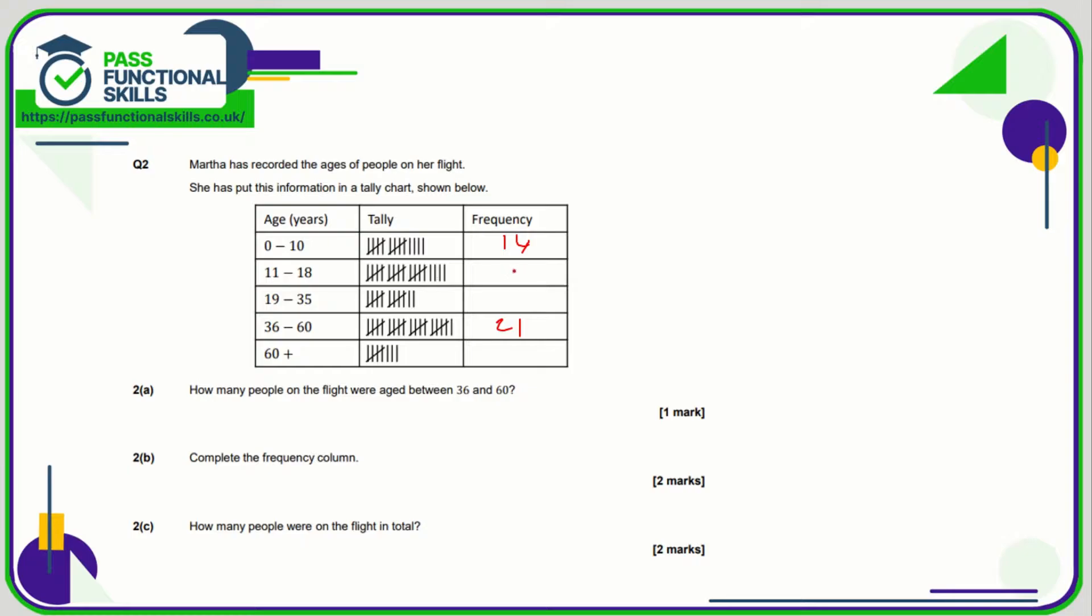Five, ten, fifteen plus four is 19. Five, ten plus two is 12. Five plus three is eight. How many people were on the flight in total? All we need to do, we can use a calculator for this question if you want to, is add 14 and 19 and 12 and 21 and eight. And we get a total of 74.